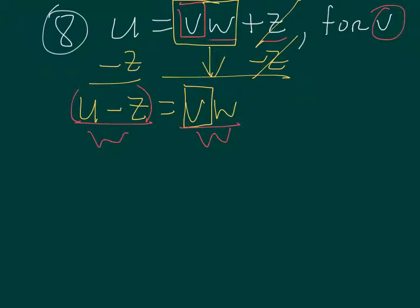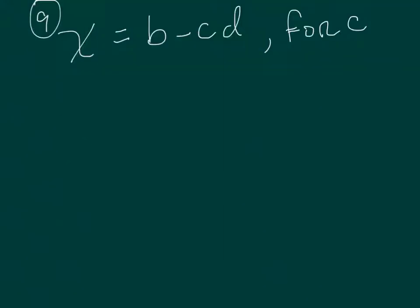In doing so those W's are gone, you're left with V equals U minus Z over W. Now I'm not sure if they're teaching them restrictions, but W cannot be zero, otherwise you just can't divide anything by zero. Okay, now let's go to this next problem that I picked out for you.